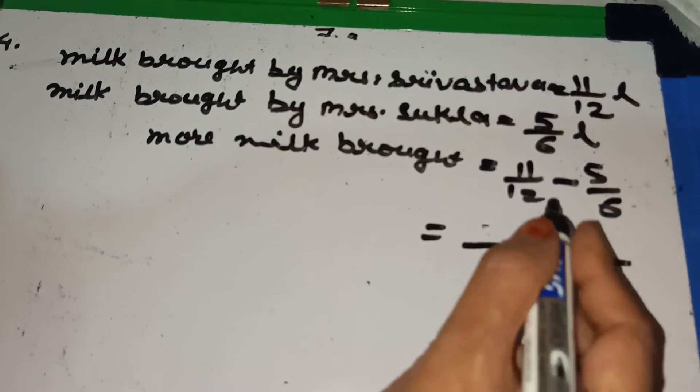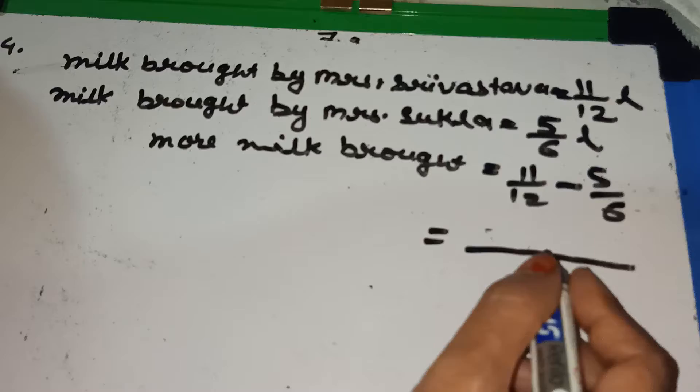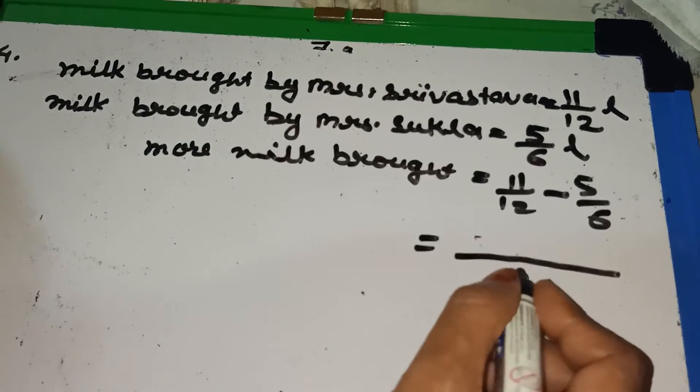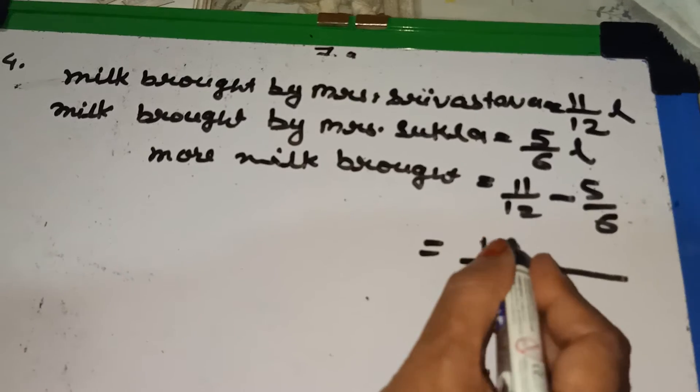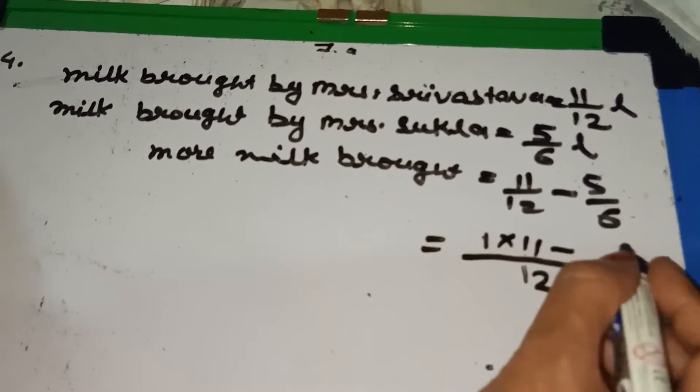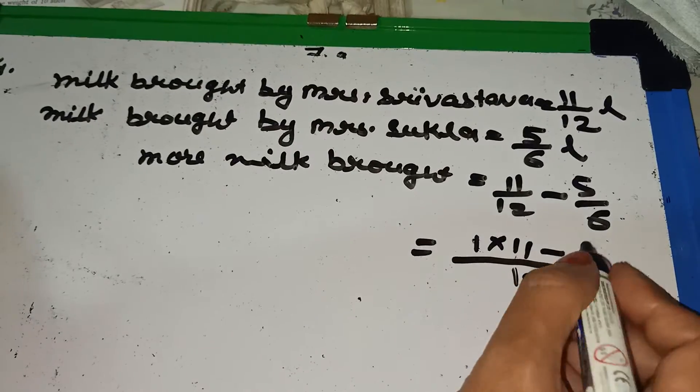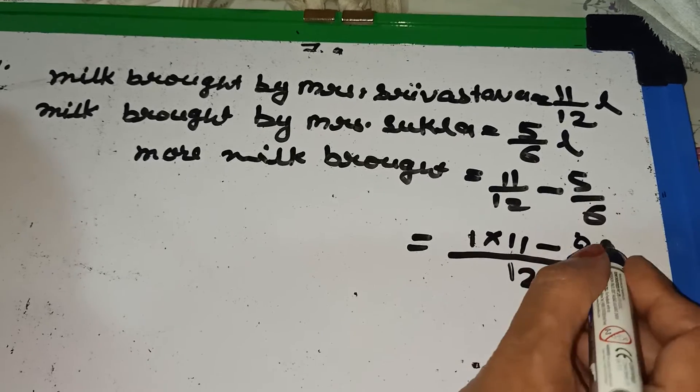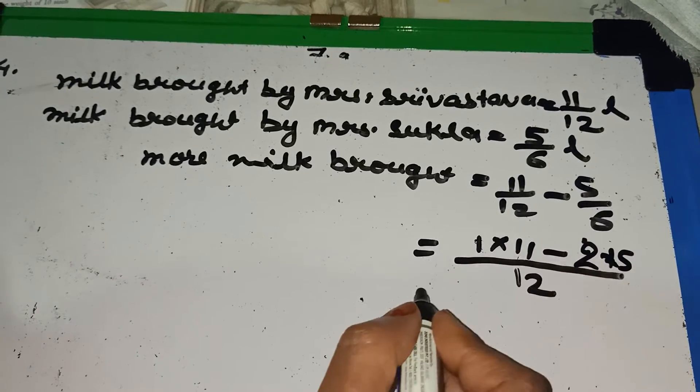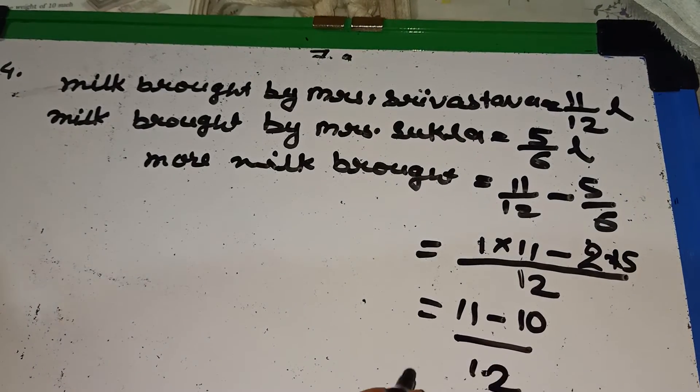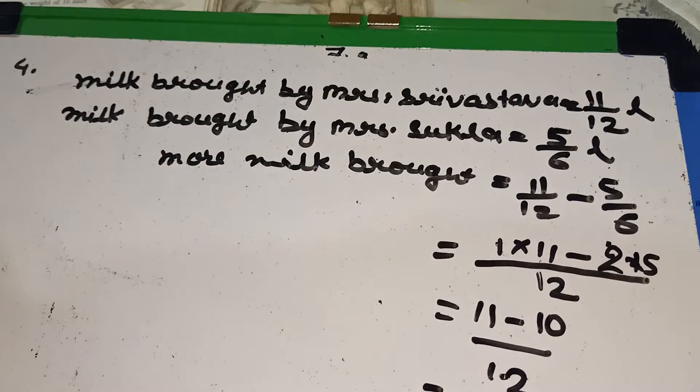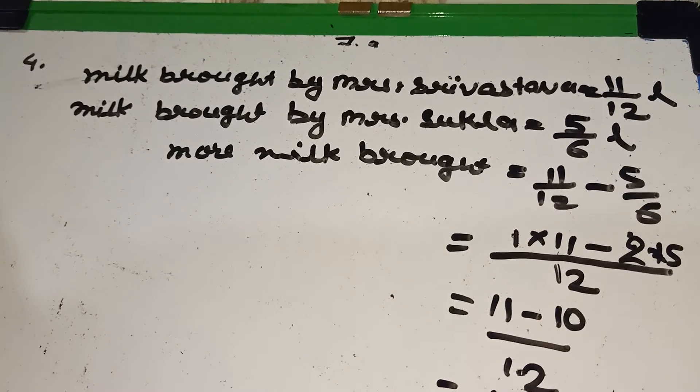More milk bought is equal to 11 by 12 minus 5 by 6. So again, we find out the LCM. LCM of 12 and 6 is 12. And 12 once is 12, 1 into 11 minus 6, 2's are 12. That's why 2 into 5.